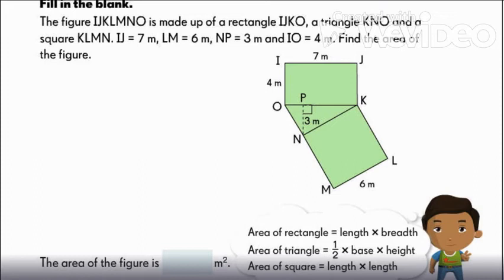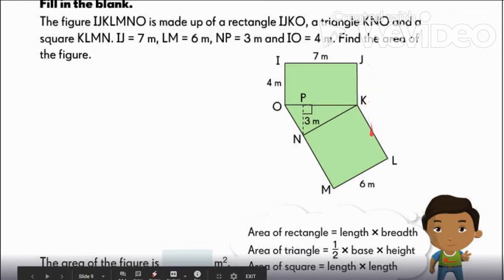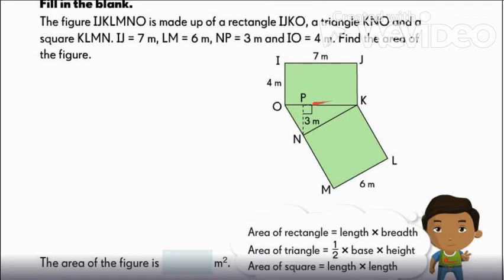Last example. Here we have figure I, J, K, L, M, N, O. It is made up of a rectangle IJKO, a triangle KNO, and a square KLMN.